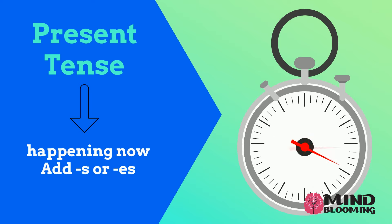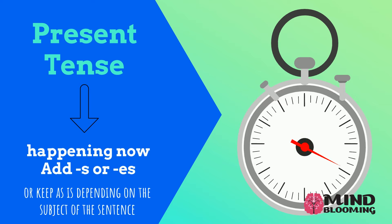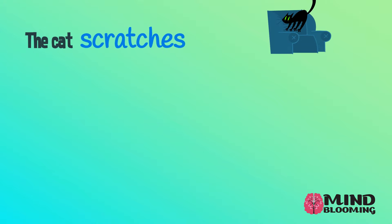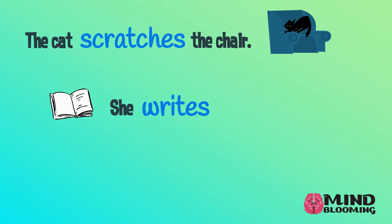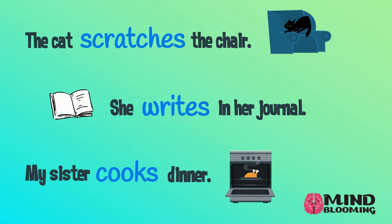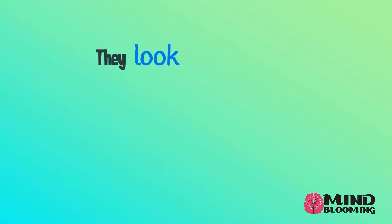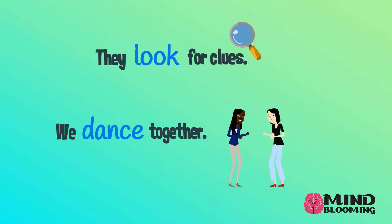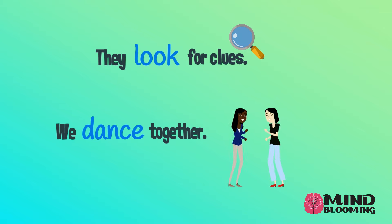Present tense means it is happening now. Depending on the subject in the sentence, I either add 's' or 'es,' or I just keep the verb as is. The cat scratches the chair. She writes in her journal. My sister cooks dinner. For all these examples, we added 's' or 'es' to the verb because the subject in the sentence is singular. They look for clues. We dance together. For both verbs, we did not add 's' or 'es' — we left them as is because the subjects in both sentences are plural.